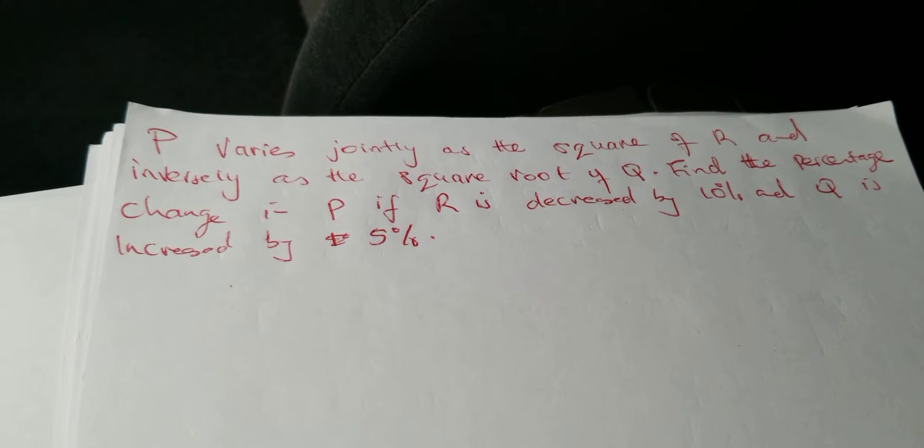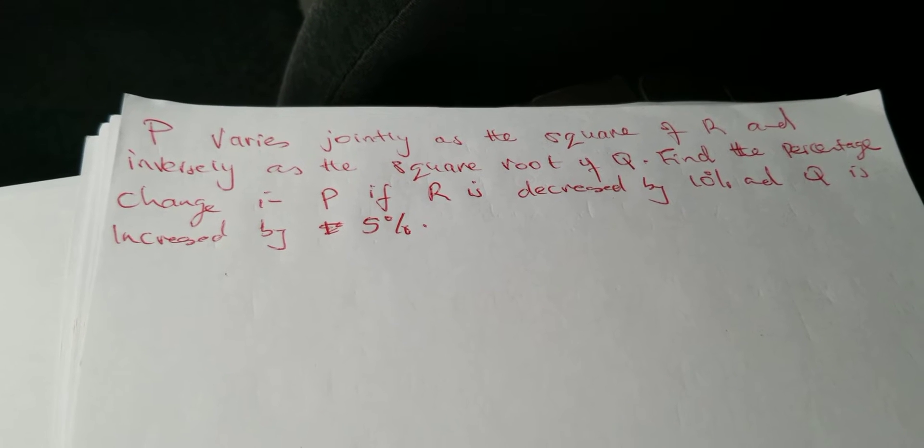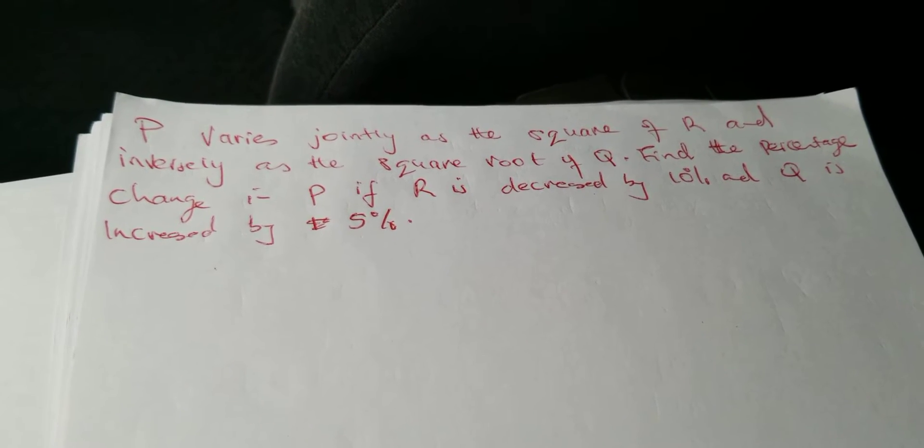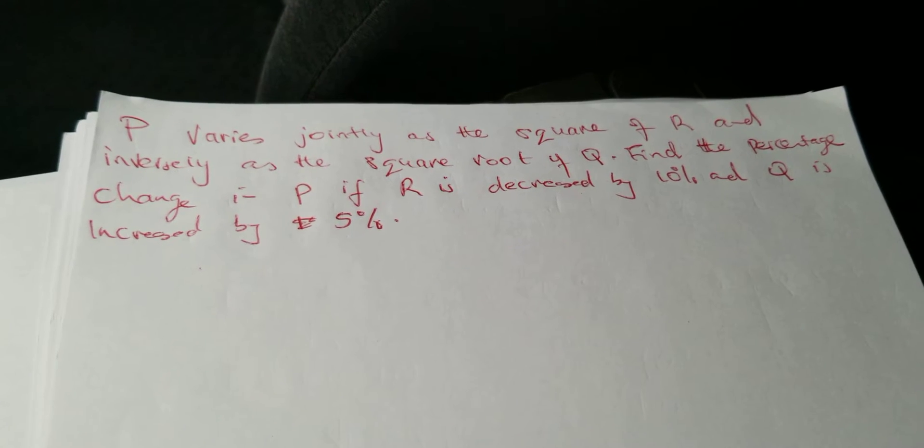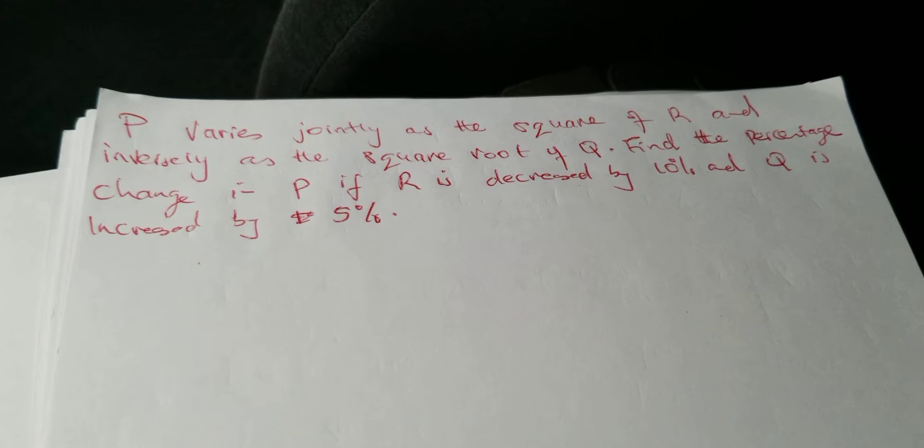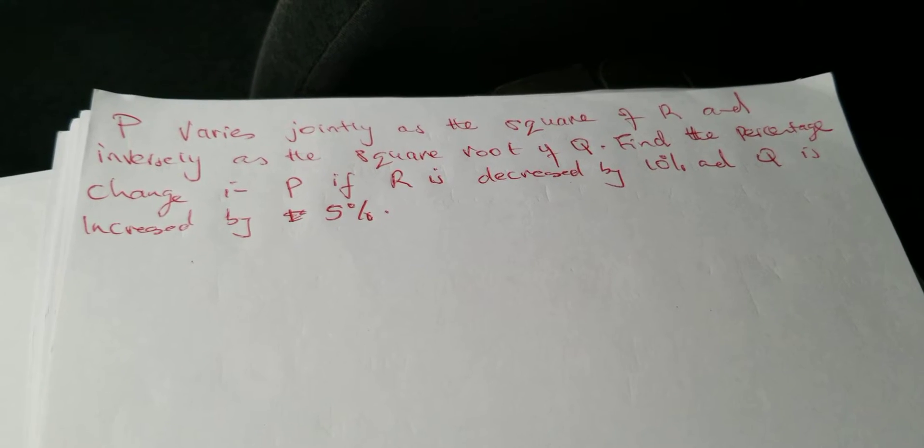Now let us consider this question: P varies jointly as the square of R and inversely as the square root of Q. Find the percentage change in P if R is decreased by 10 percent and Q is increased by 5 percent.